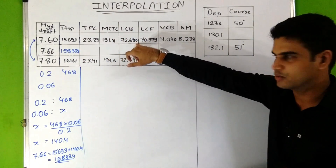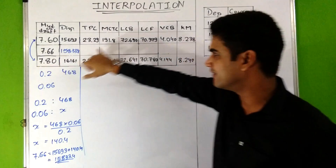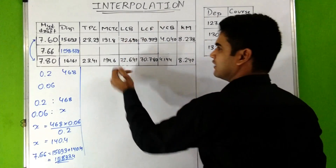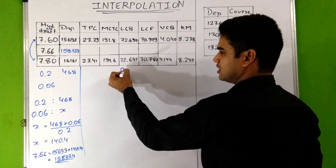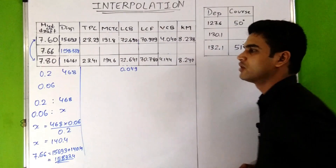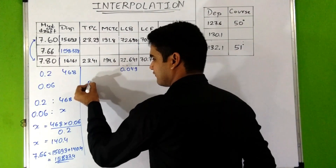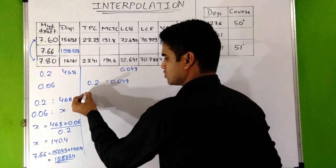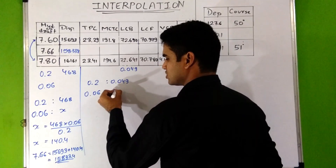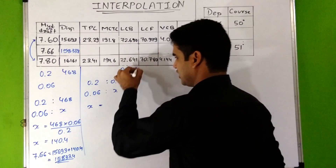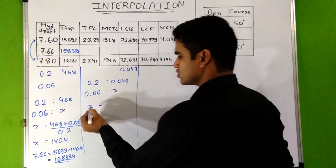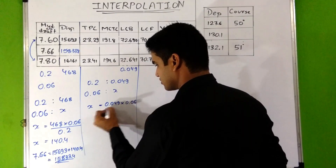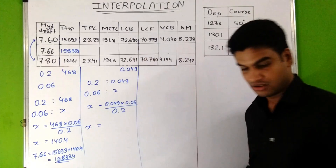For draft 7.8, LCB is 72.641. The difference between these two known LCB values is 0.049. So at a draft difference of 0.2, the difference in LCB is 0.049. We need to find the LCB change for a draft difference of 0.06, so again we do cross multiplication: x equals 0.049 multiplied by 0.06, divided by 0.2.